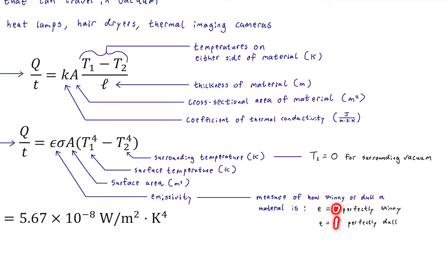A black body appears black because it absorbs all wavelengths of light — none are reflected. White is the combination of all colors; black absorbs them all. So a black body (ε = 1) is the best radiator of heat energy, while a perfectly shiny object (ε = 0) cannot emit any radiation.